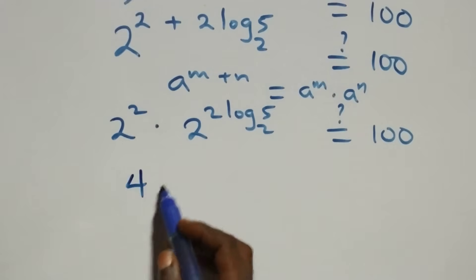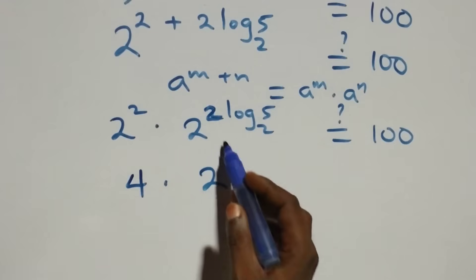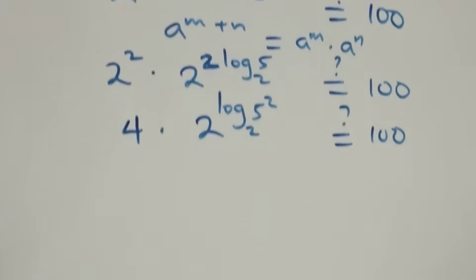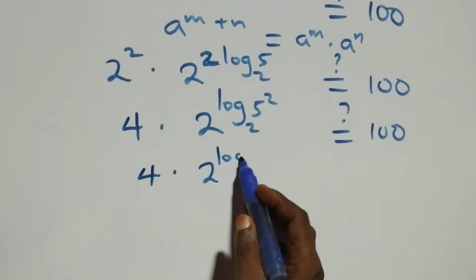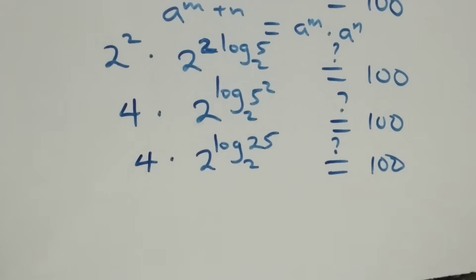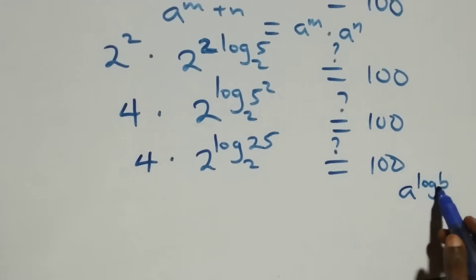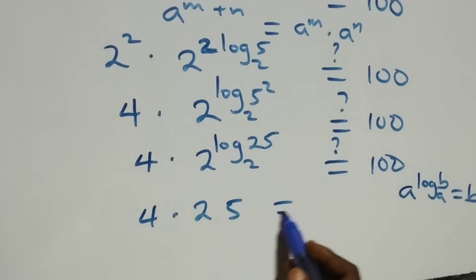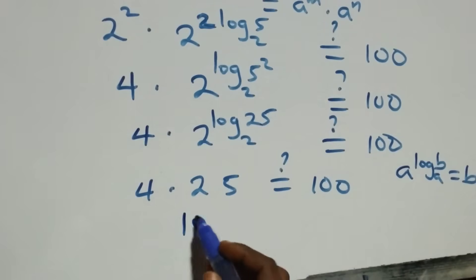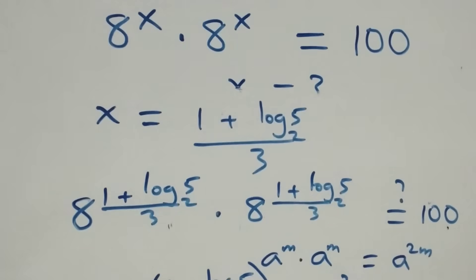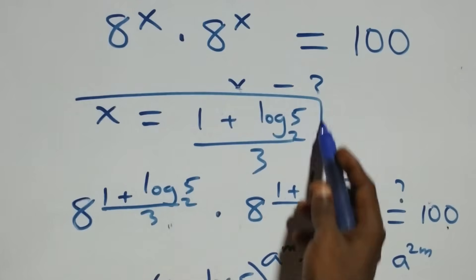2 squared is 4. We reverse the power-log rule: 2 raised to power 2 log 5 base 2 becomes 2 raised to power log 5 squared base 2, which is 2 raised to power log 25 base 2. Applying the identity a raised to power log b base a equals b, we get 4 times 25 equals 100. Left-hand side equals right-hand side, so we conclude that x equals 1 plus log 5 base 2 all over 3 satisfies the given problem.